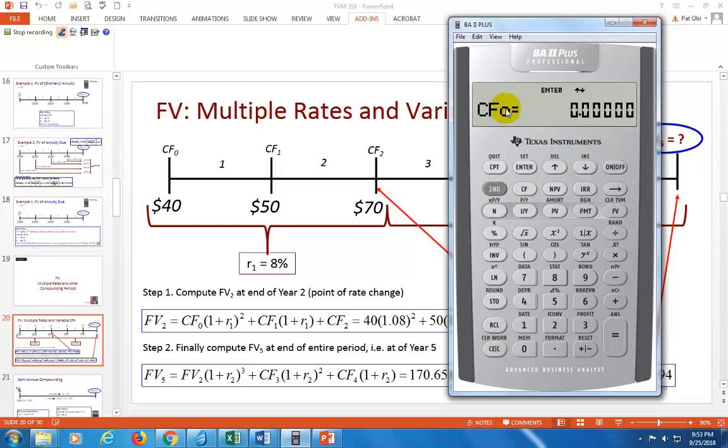So now we're going to go to CF sub zero, which would be this $40. So type 40 and enter and scroll to C1, which is this $50. C1 refers to cash flow occurring at the end of the first period. Hit enter and go to C2, which is $70. So you hit 70 and hit enter. And that's it.